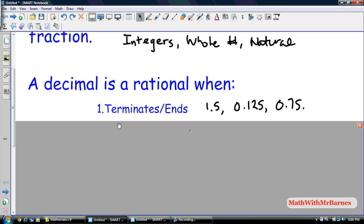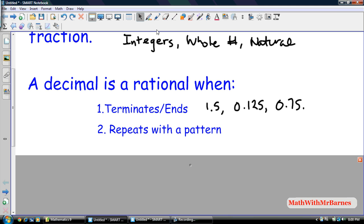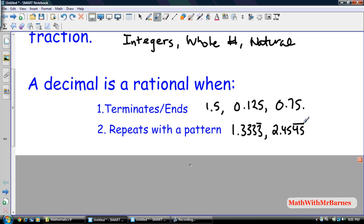And the second example, or the second case is when a decimal is a rational number, is when it repeats with a pattern. So, for example, 1.33333, so on, and it keeps repeating 3, or 2.4545, continued on forever. Those repeat with a pattern. So there's some distinct pattern that just keeps repeating over and over again.